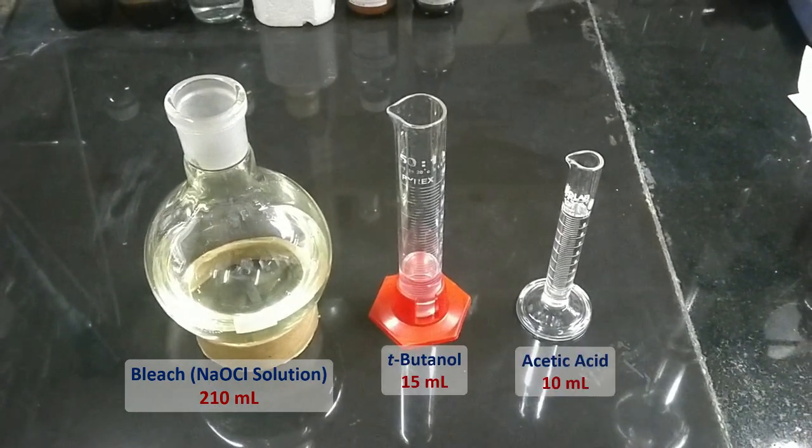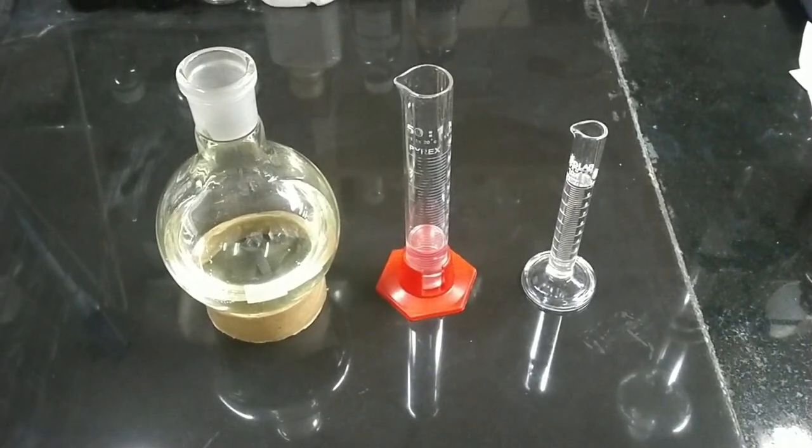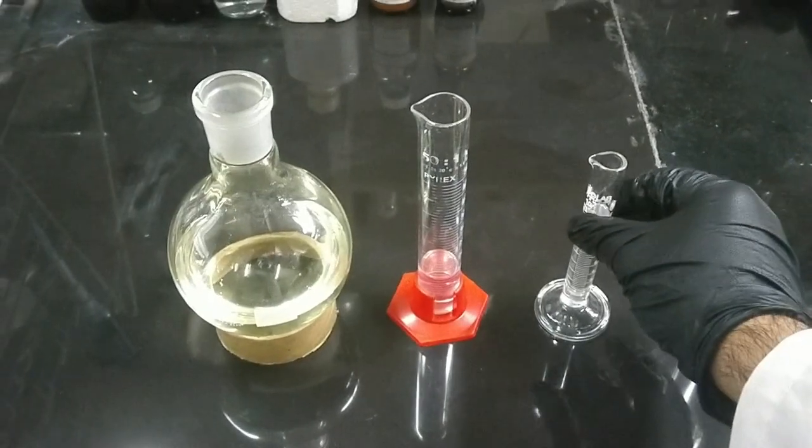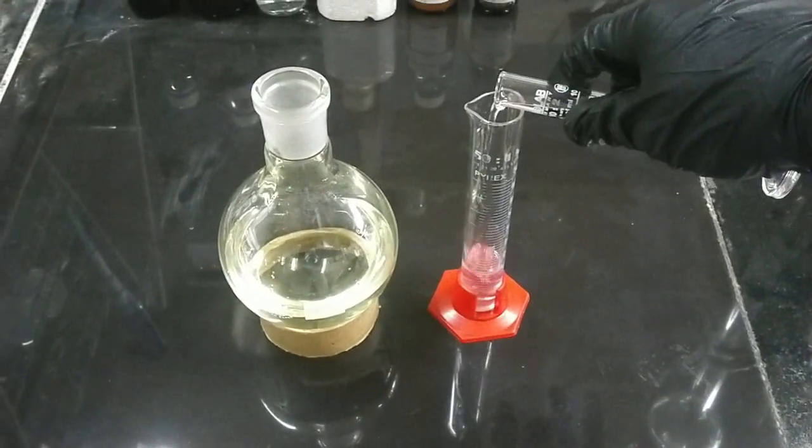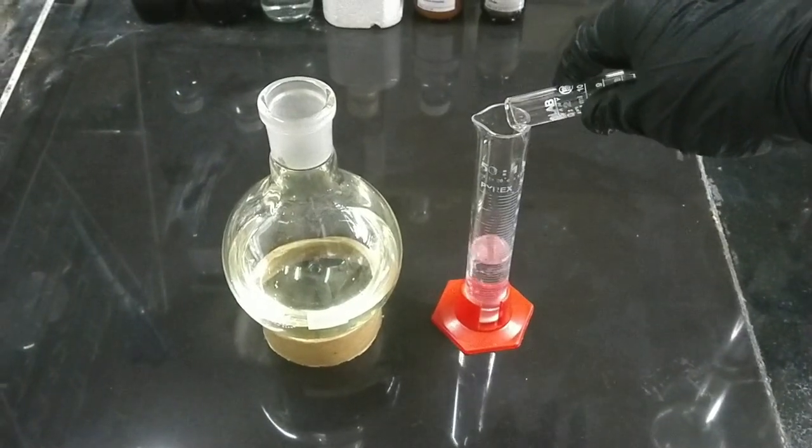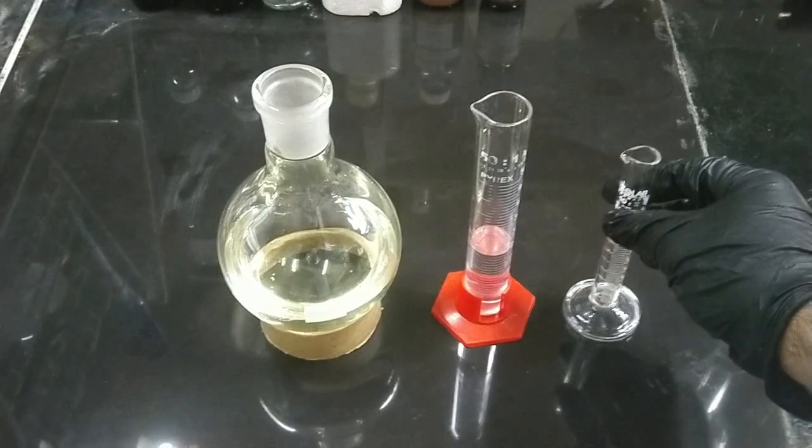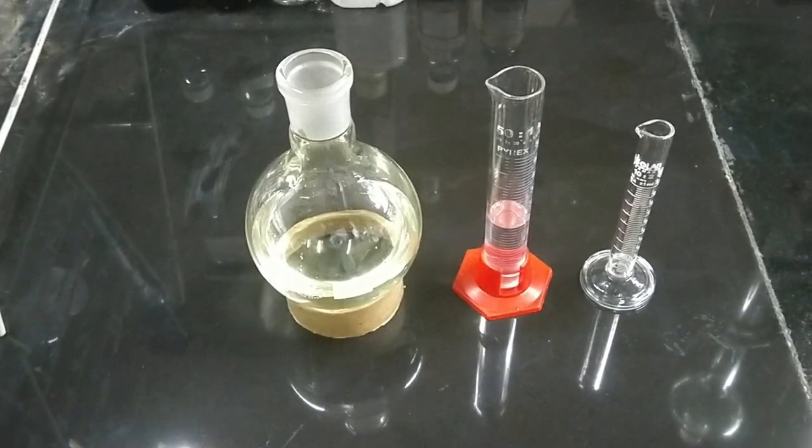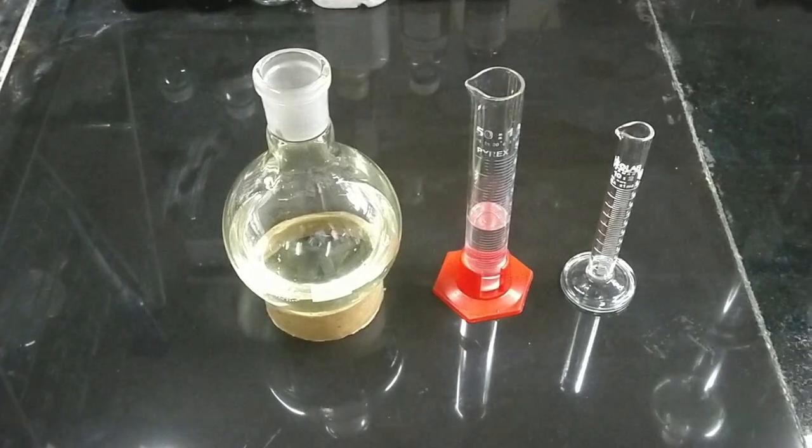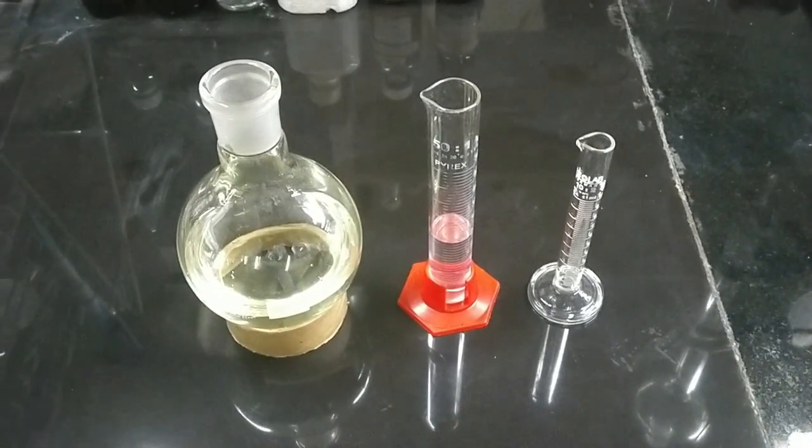In the first step, I'm going to add the acetic acid to the tertiary butanol. Now I have a solution of acetic acid in tertiary butanol. In the next step, I'm going to lower the temperature of sodium hypochlorite, that's the bleach.